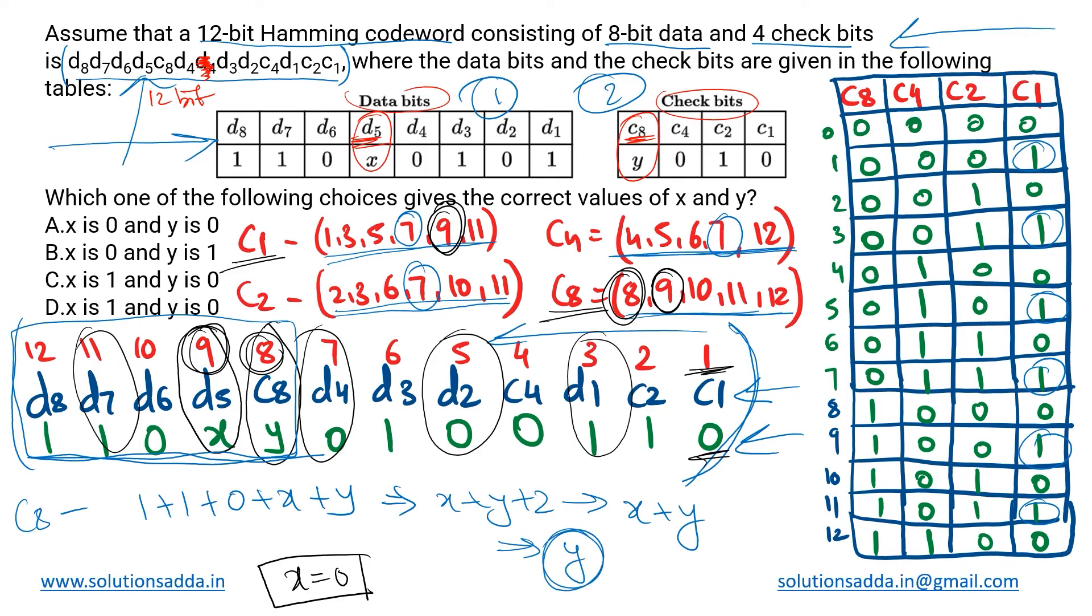And again we have to ensure even parity because of c8. Over here the result we are getting is y, so for this to satisfy the even parity, again y has to be 0. So going with this method, we get both x and y to have the value as 0.